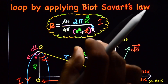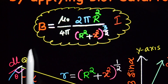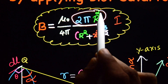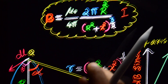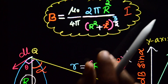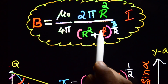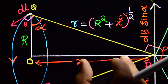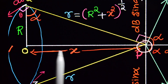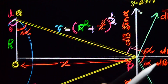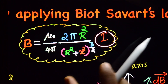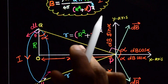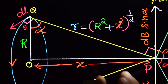We are going to derive that the expression for magnetic field at point P is equal to mu₀ divided by 4π, multiplied by 2π R², where R is the radius of the circular loop, divided by (R² + X²)^(3/2). Here X is the distance between point P and O, and I is the current through the circular loop.